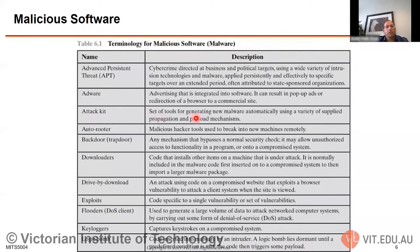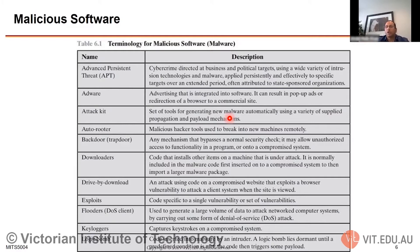Attack kits are a set of tools that automatically generate new malware using a variety of propagation and payload mechanisms. Payloads come through IP packets, and as new malware is automatically generated it connects to back-end illegal websites and downloads more and more malicious software and variants of it.